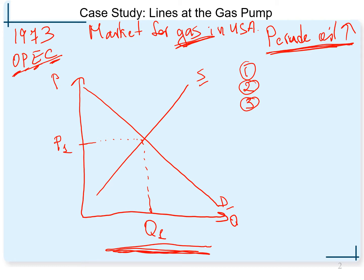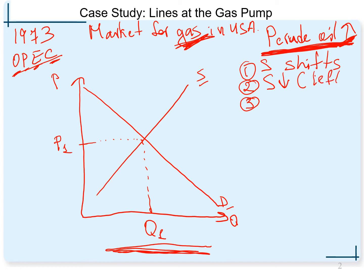We use crude oil to produce gasoline. Since crude oil is the input price of producing gas, the supply curve is affected and is going to shift. Since the input price is increasing and it's now less profitable to produce each unit of gas, the supply curve is going to decrease — and when we decrease supply, we shift it to the left.